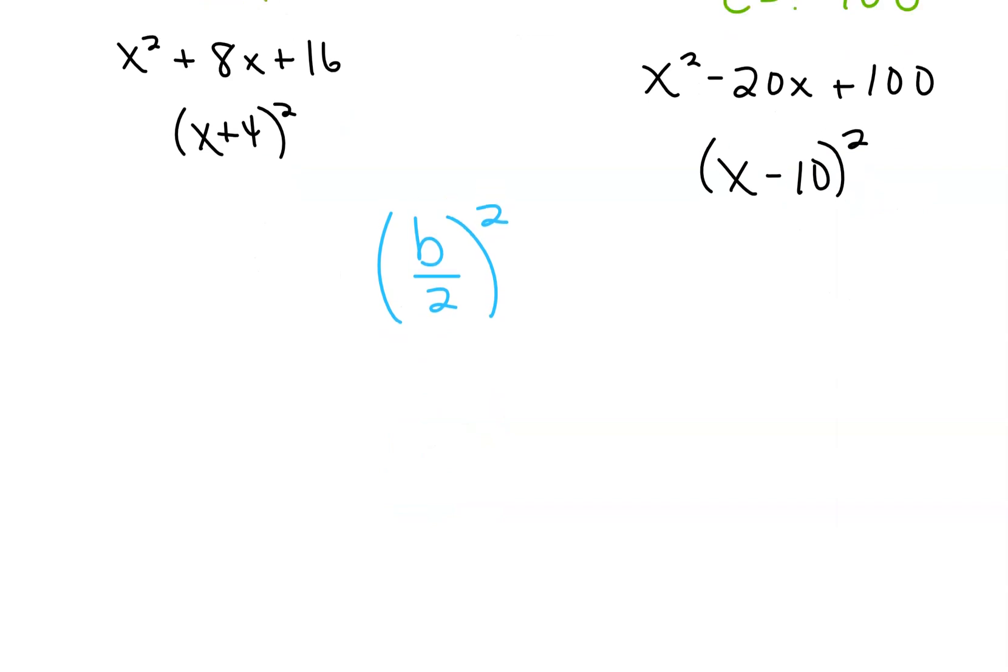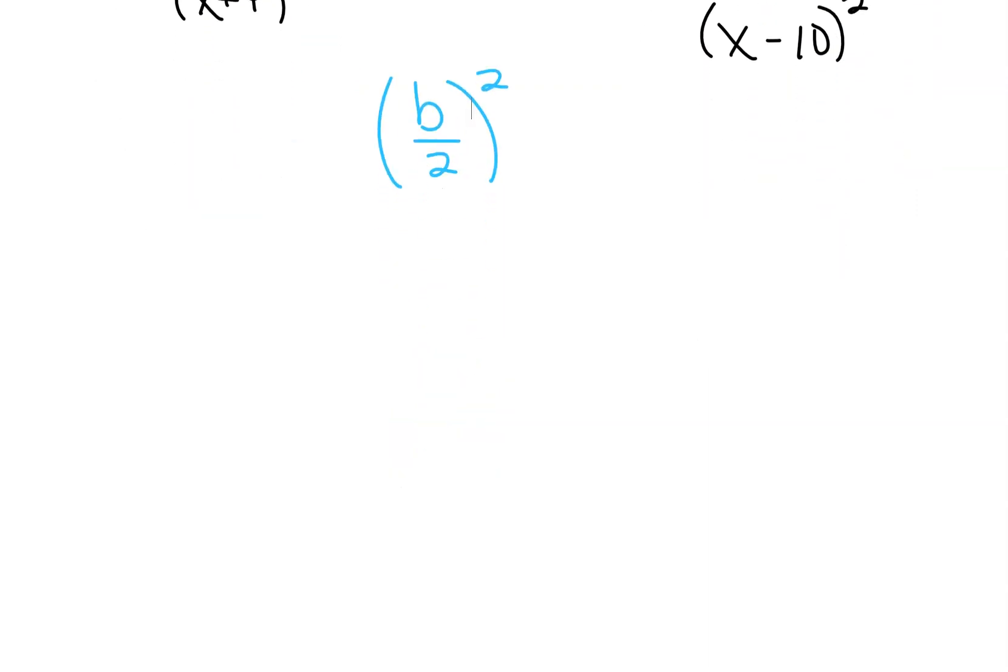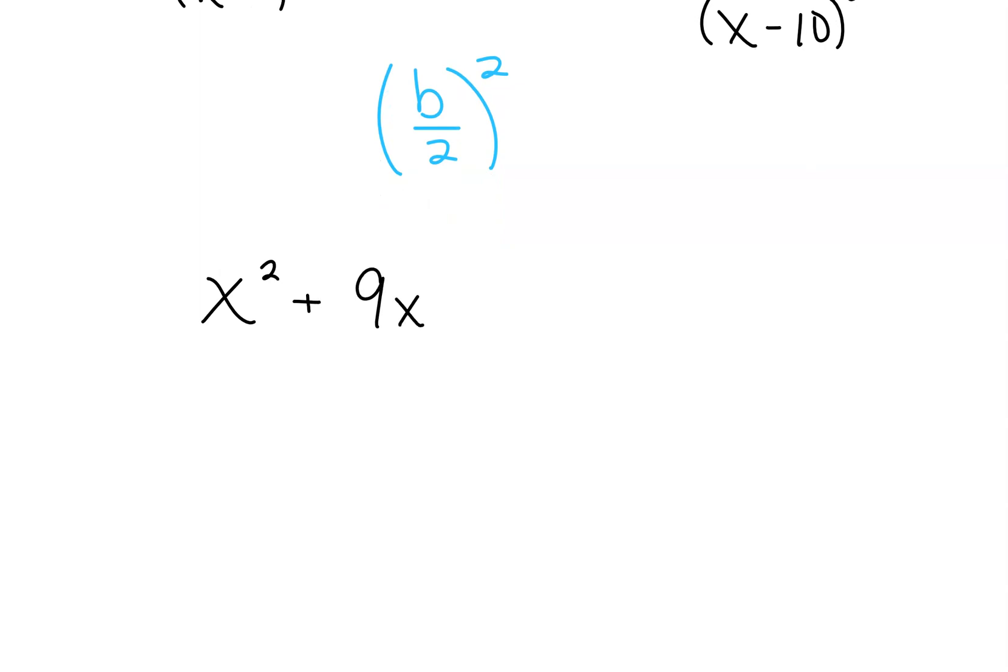If the number is, both of these were very easy, because the two numbers I gave you to take half of were what kind of numbers? Even. What if they were odd? It wouldn't be easy to do. So if they're odd, like you have x squared plus 9x plus b, rather than change it into a decimal and then having to use your calculator, I just want you to keep doing it like a fraction.